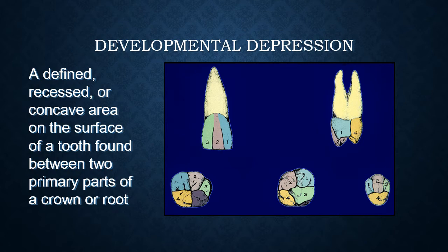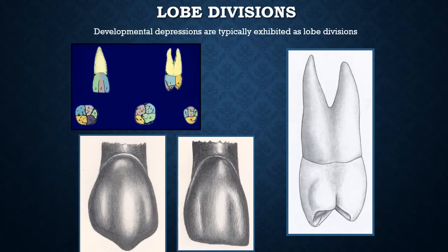Developmental depressions appear on the facial surfaces of anterior teeth, as well as molars and premolars. These developmental depressions are negative anatomical landmarks — well-defined, recessed or concave areas that show the different primary parts of the crown or roots, indicating where these parts joined together and coalesced during later stages of tooth development.